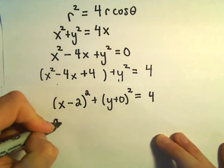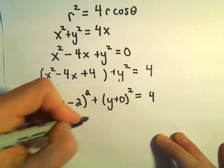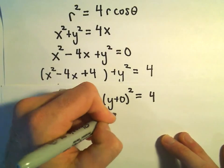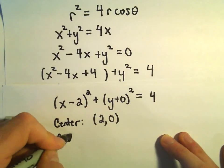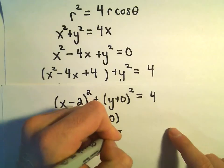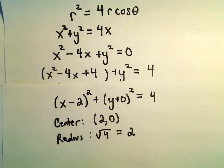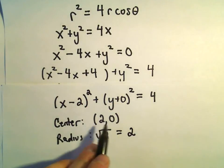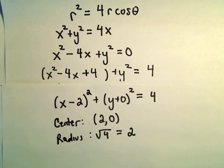And now, this is going to be a circle with center of positive 2 comma 0. And its radius, again, we would have to take the square root of 4, which would simply give us 2. So this is just going to be a circle centered at 2 comma 0 with radius equal to 2.